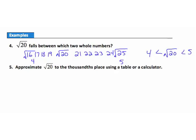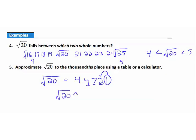Example 5: approximate the square root of 20 to the thousandths place using a table or calculator. We know the answer is between 4 and 5. Punching the square root of 20 into the calculator gives 4.4721. Rounding to the thousandths place — tenths, hundredths, thousandths — the digit after tells us to keep the 2 the same. So the square root of 20 is approximately 4.472.